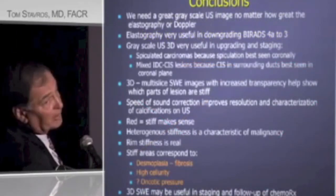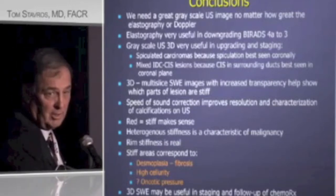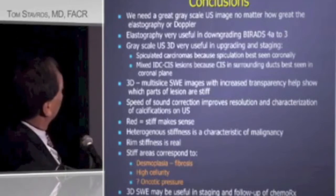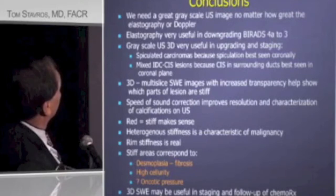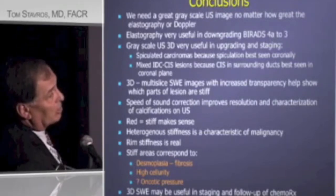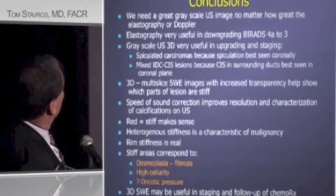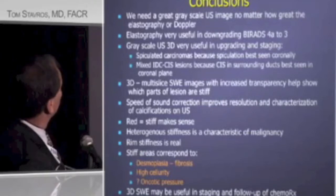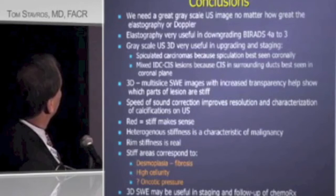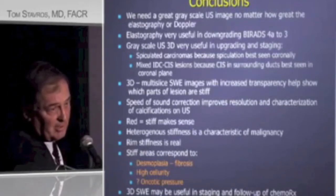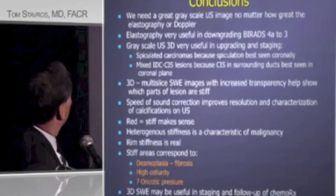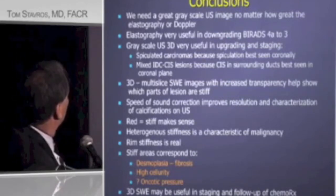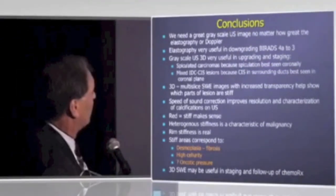In conclusion, we need great grayscale ultrasound no matter how good the shear wave is — and we've got it. It can be very useful in downgrading BI-RADS 4 and 3, as Ellinger showed, and very useful in upgrading staging of spiculated lesions because the spicules are best seen coronally, and in mixed invasive and carcinoma in situ lesions because the duct extensions are best seen coronally. Multi-slice images with increased transparency help show exactly what's stiff, and speed-of-sound correction improves resolution and characterization of calcifications on ultrasound. Red means stiff makes sense to me — red always means danger — so I'd sure like to see red be the standard. Rim stiffness is real, not an artifact, and the stiff areas correspond to desmoplasia, high cellularity, and maybe oncotic pressure. 3D shear wave may be very useful in staging and follow-up of chemotherapy.